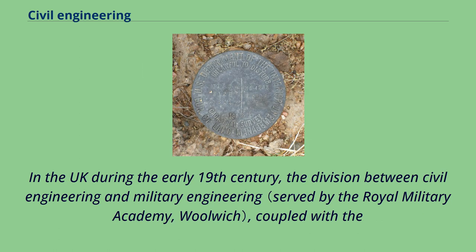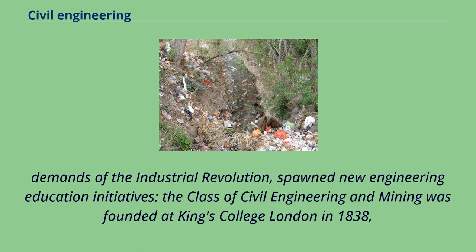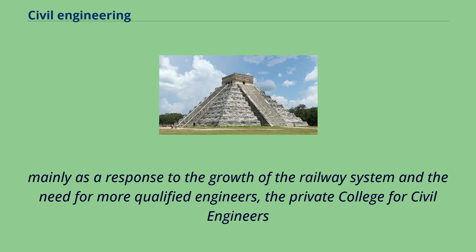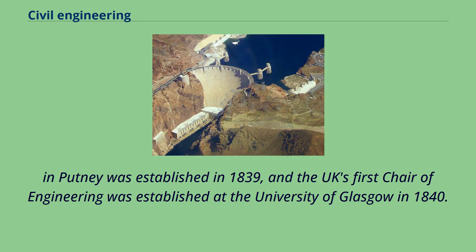In the UK during the early 19th century, the division between civil engineering and military engineering, coupled with the demands of the industrial revolution, spawned new engineering education initiatives. The class of civil engineering and mining was founded at King's College London in 1838. Mainly as a response to the growth of the railway system and the need for more qualified engineers, the private college for civil engineers in Putney was established in 1839, and the UK's first chair of engineering was established at the University of Glasgow in 1840.